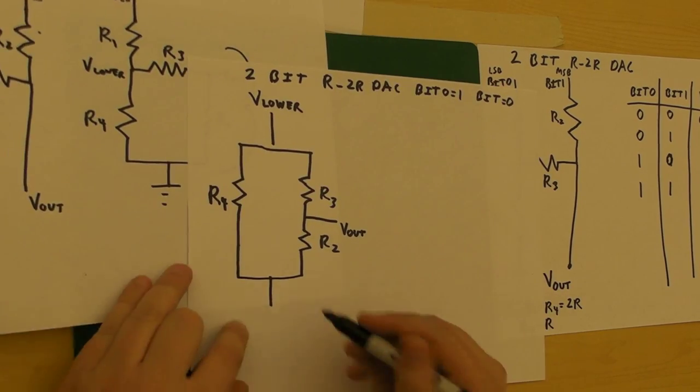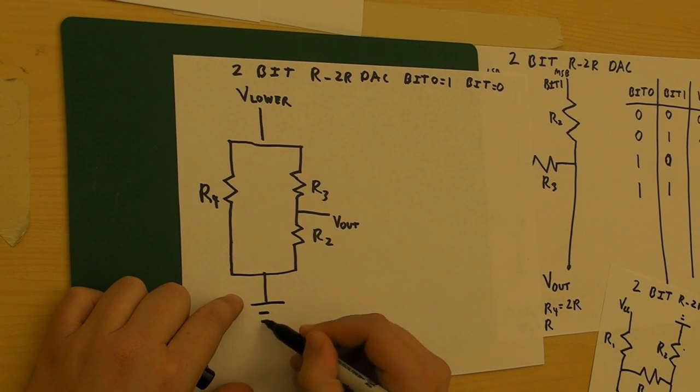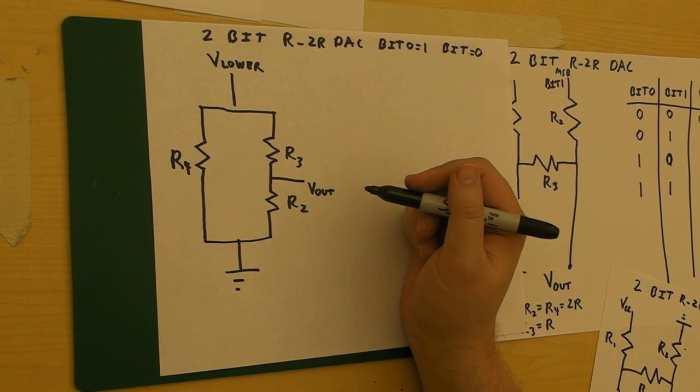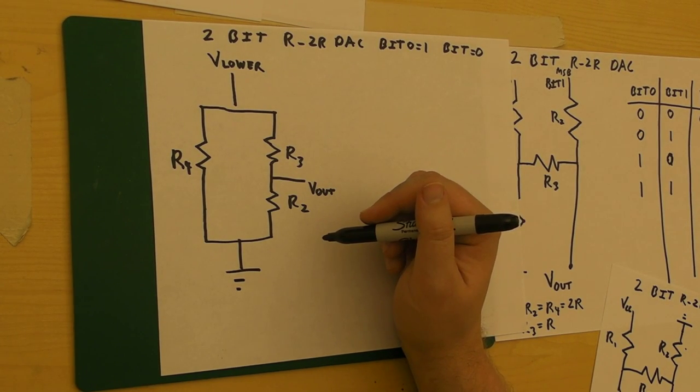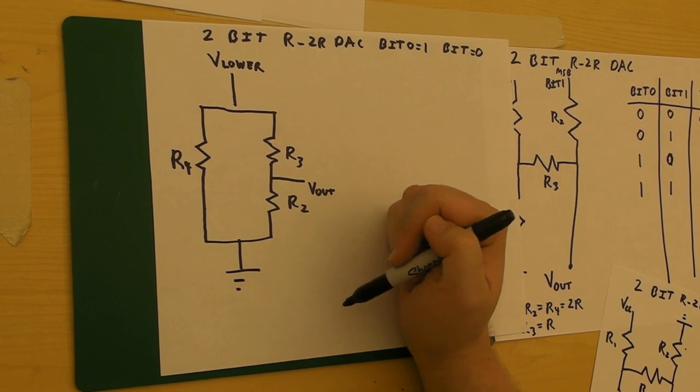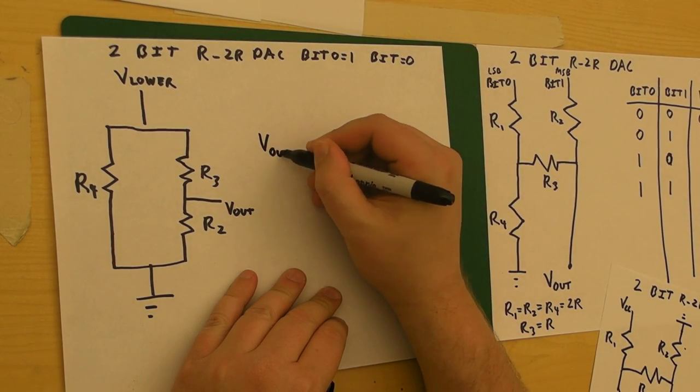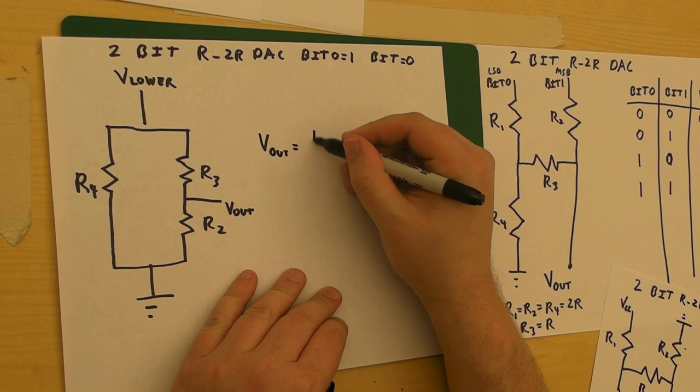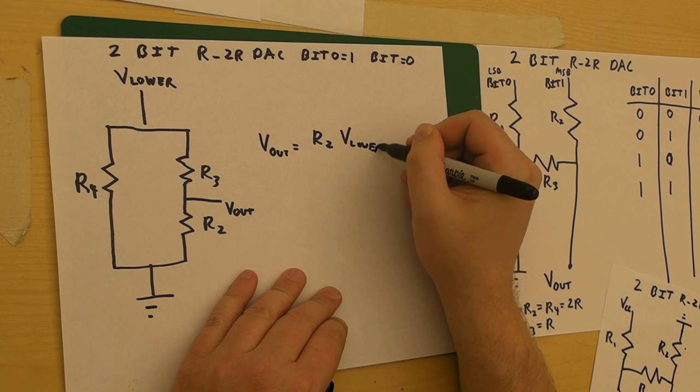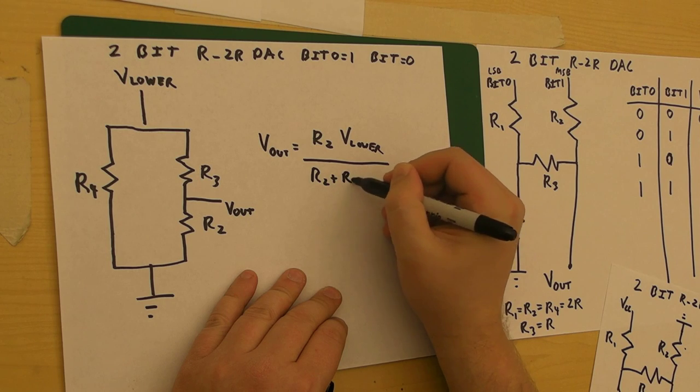So we have V lower, we have ground here, and we have, oh, this looks very much like a normal resistor circuit again. Well, that's convenient. Well, this looks very much like a voltage divider. So we know that V out is going to be equal to R2 times V lower over R2 plus R3.